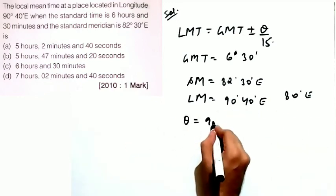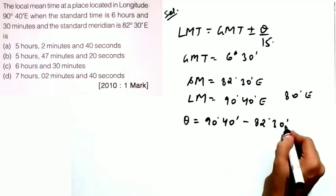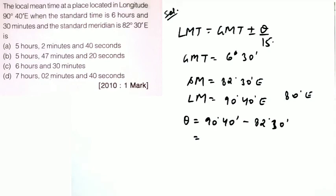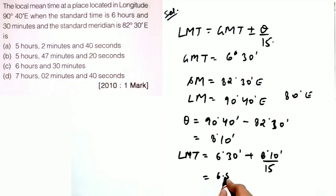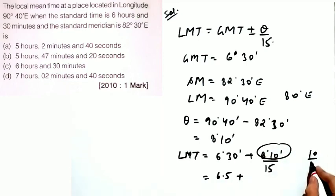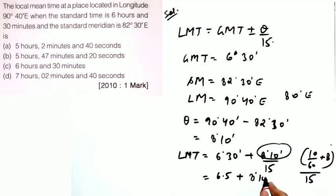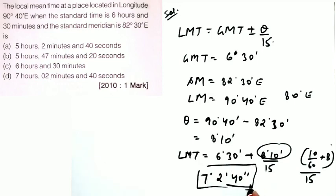The value of θ = 90°40' − 82°30' = 8°10'. Therefore, LMT = 6h 30min + 8°10'/15. Converting: 6h30min = 6.5°, and 8°10' = 8 + 10/60 degrees. Dividing by 15 and adding gives LMT = 7 hours, 2 minutes, and 40 seconds. This corresponds to option D.